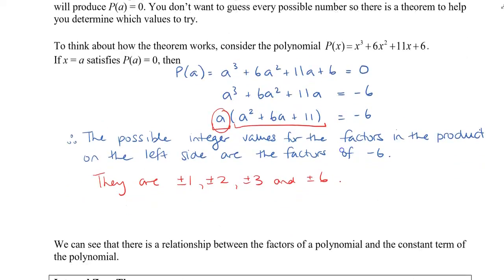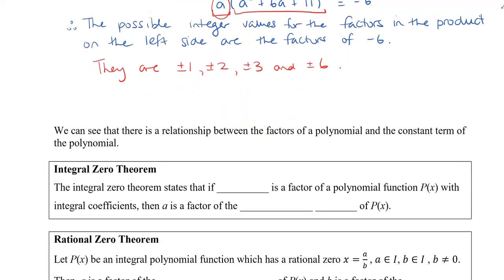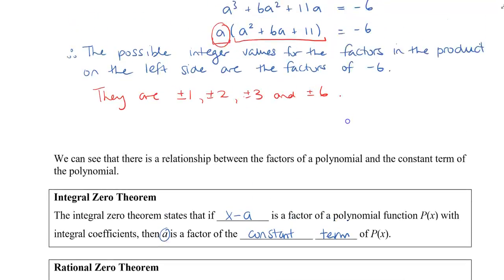We can see there is a relationship between these factors and the constant term — the 6 at the back — which leads us to the Integral Zero Theorem. The Integral Zero Theorem states that if x minus a is a factor of the polynomial function p of x with integral coefficients, then a is a factor of the constant term. So 1, 2, 3, and 6 are all factors of negative 6.